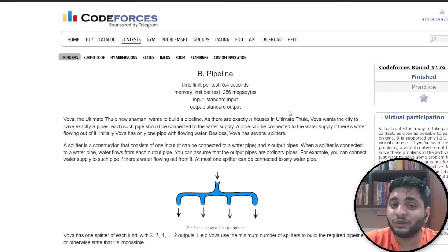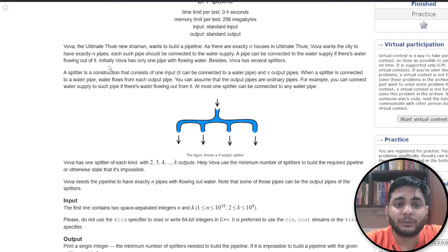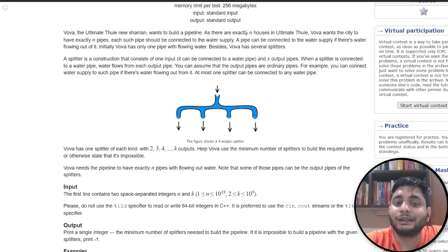Hey guys welcome back to the algorithm decoded, we are on our question number three of Striver's DP sheet. Without wasting any time let's just start with question number three which is pipeline. The problem states that there are exactly n houses and we want to build a pipeline.